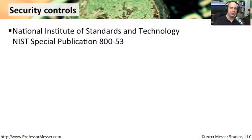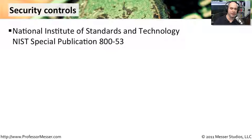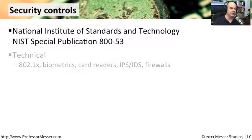In one of our previous videos, we talked about this document from the National Institute of Standards and Technology — NIST Special Publication 800-53. If you Google that, you'll be able to find the PDF file that talks about these different categorizations or different classes of risk, and things you can do in each one of those classes to help mitigate risk. Let's step through a few of these.